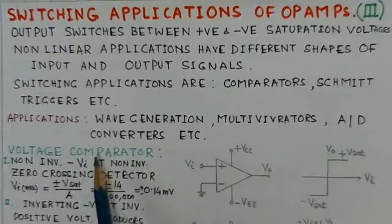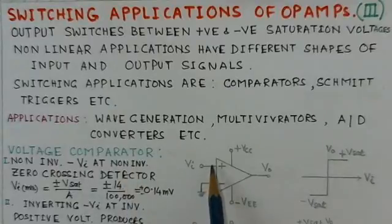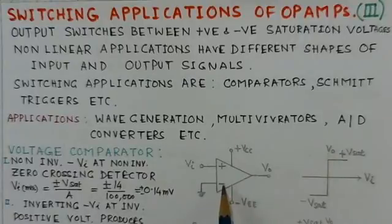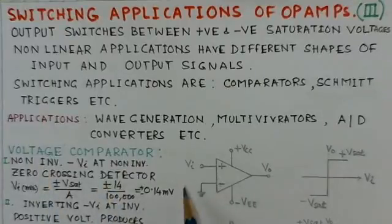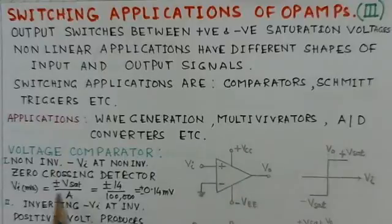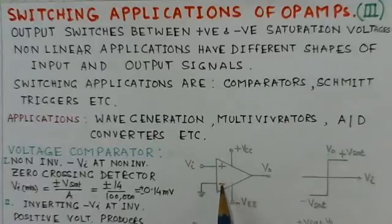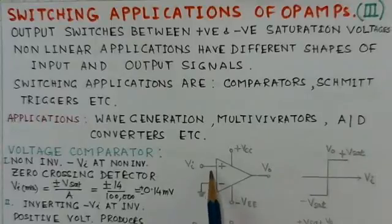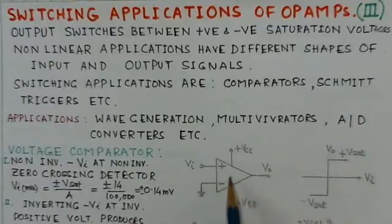The voltage comparator is basically an analog comparator. It compares the voltages applied to the non-inverting and inverting terminals. This particular circuit is the non-inverting voltage comparator, where VI is put at the non-inverting terminal. This is also sometimes called a zero crossing detector, since the inverting terminal is grounded.